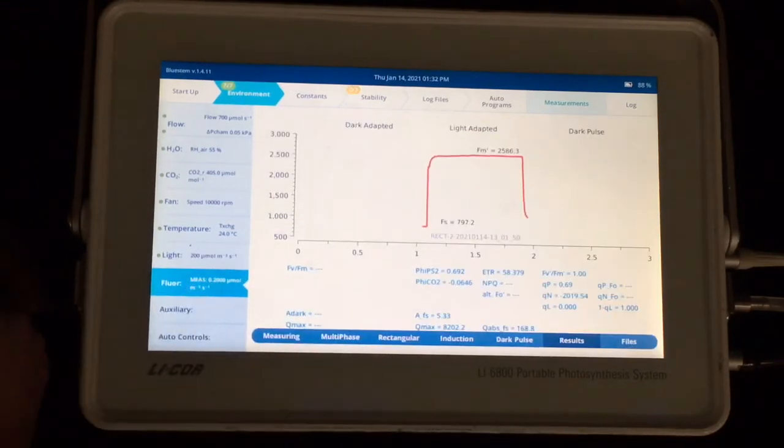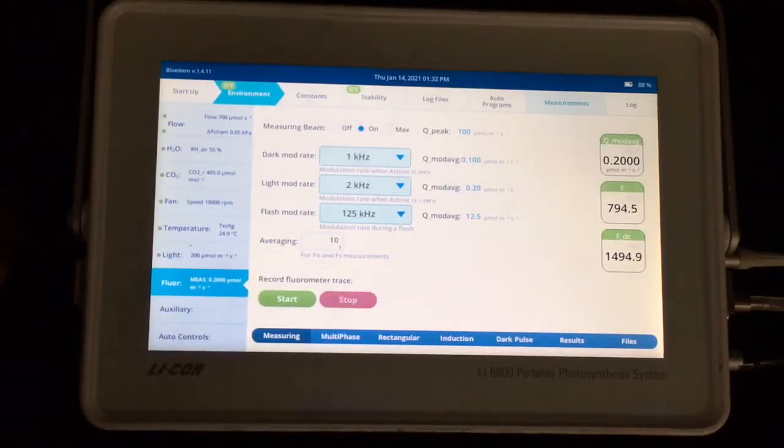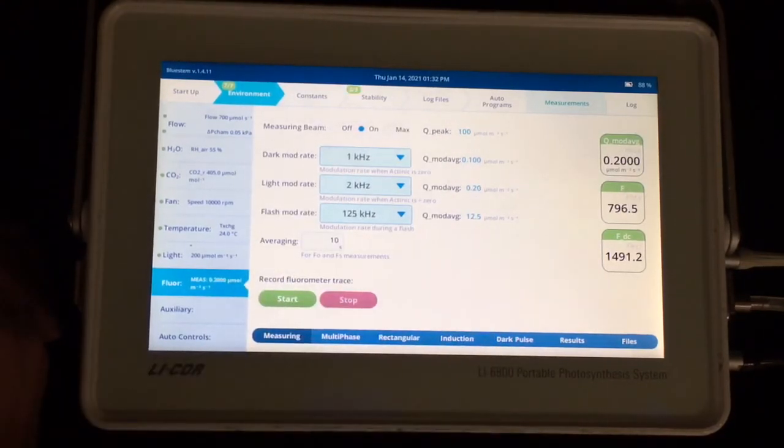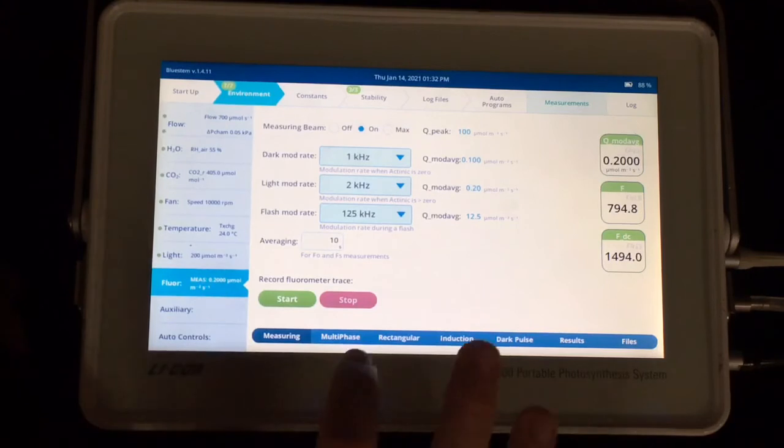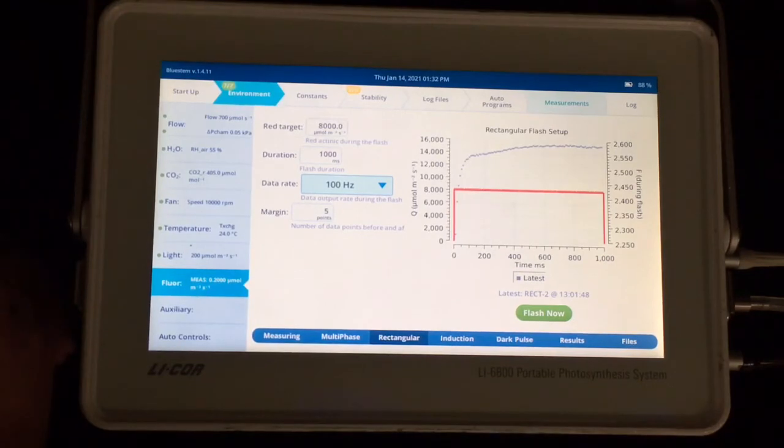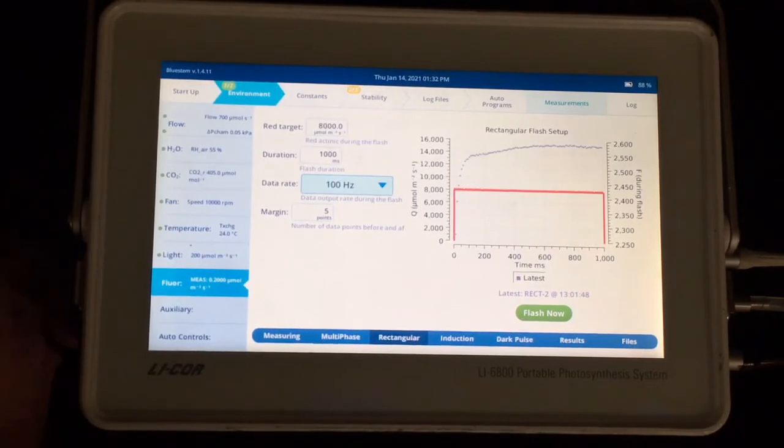If you also want to measure fluorescence, you would want to make sure your measuring beam is turned on. And the sort of standard modulation rates are a good starting point. And then you would want to set up the type of flash you wish to give. Here I'll give a rectangular flash. And a good starting point for making measurements is to look at maybe an 8,000 micromole per meter squared per second flash at about one second long. These are all parameters that would need to be explored to see their impacts on your plant material.